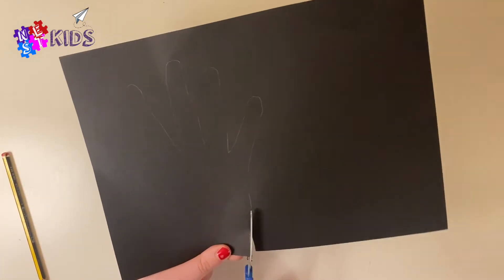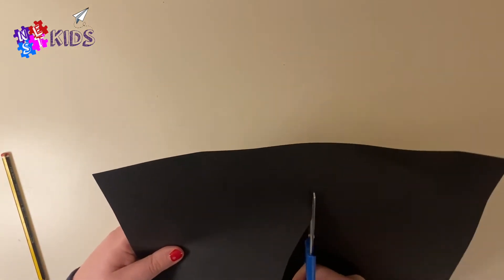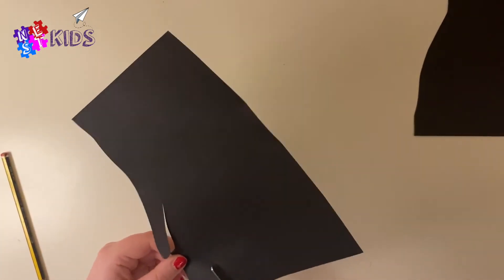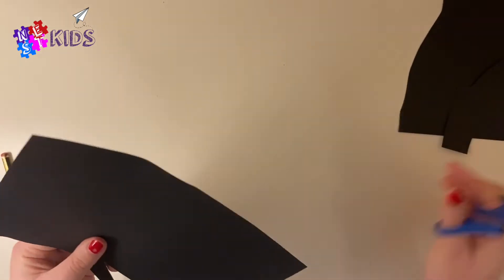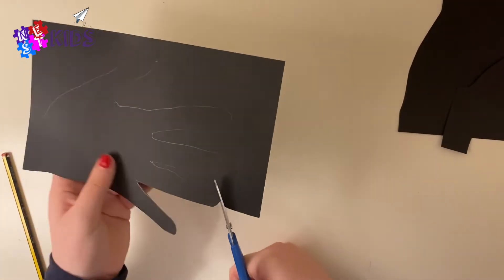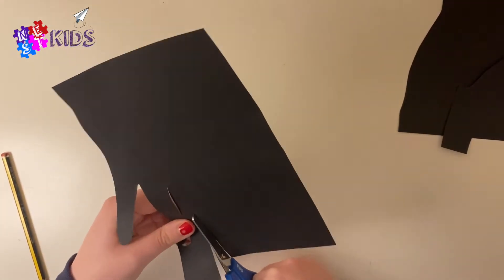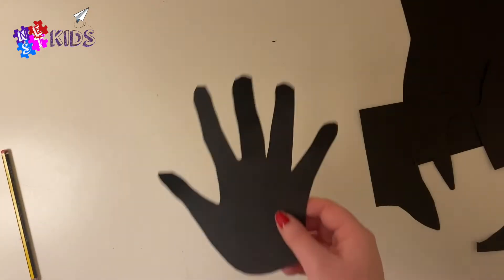Next, you need to cut out that hand that you just drew. Cut all the way along the edge. It doesn't have to be really neat, but maybe get an adult to help you with the scissors as they can be really sharp. Just keep cutting round.